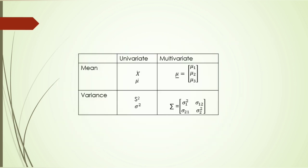Comparing univariate and multivariate statistics: in univariate analysis, the mean is represented by x-bar (sample mean) or mu (population mean). In the multivariate case, since we have measurements on several variables, we use a vector of means — mu-1, mu-2, mu-3 — representing each variable in vector form.